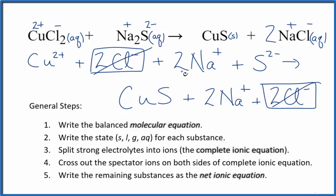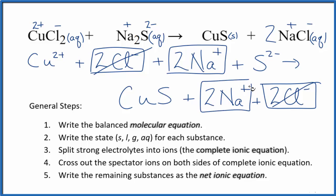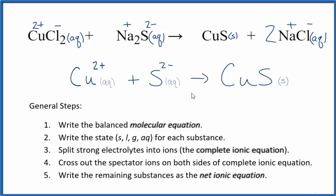We also have two sodium ions, and again in the products, two sodium ions — spectator ions. We cross those out. And what's left is the net ionic equation for CuCl2 plus Na2S. I'll clean it up and write the states in. This is the balanced net ionic equation for copper 2 chloride and sodium sulfide.